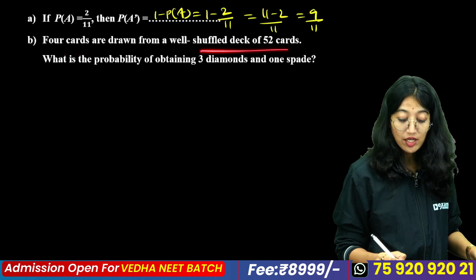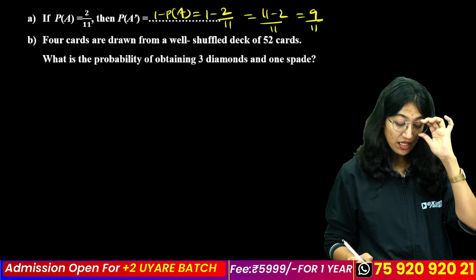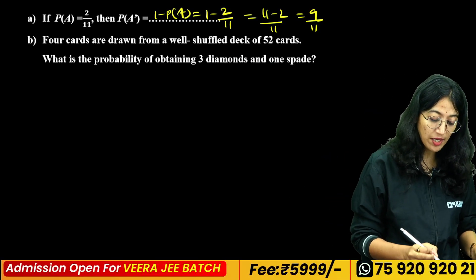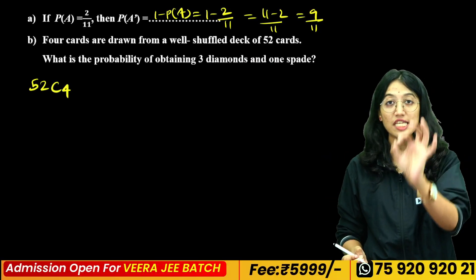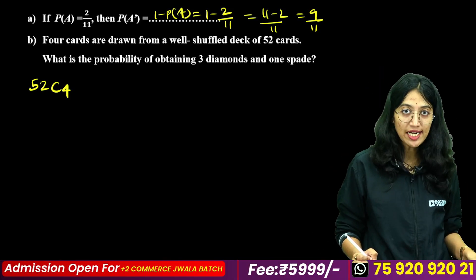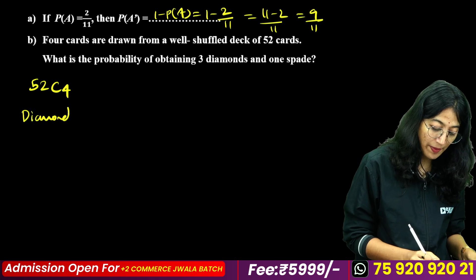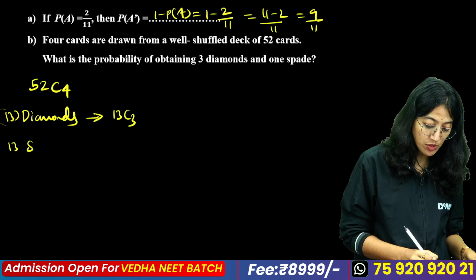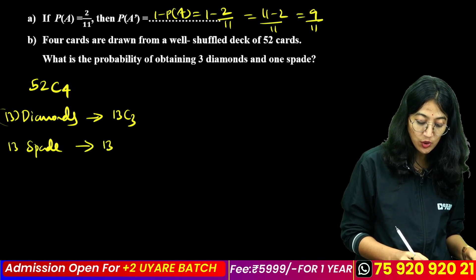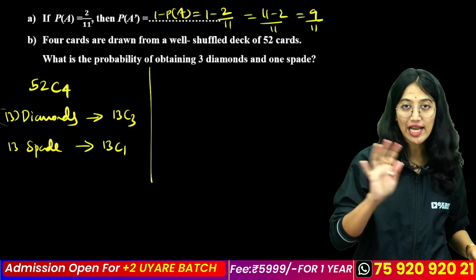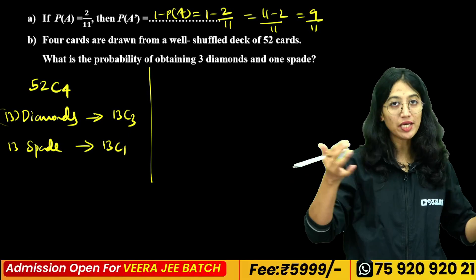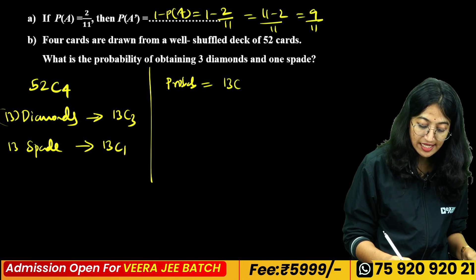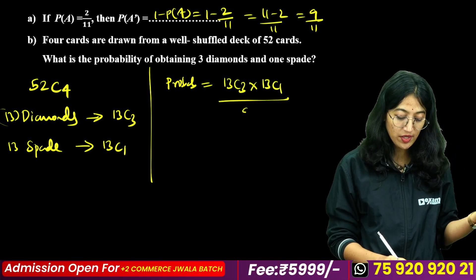Four cards are drawn from a well-shuffled deck of 52 cards. Find the probability that 3 are diamonds and 1 is not. The total sample space is 52C4. There are 13 diamonds, so we choose 3 diamonds: 13C3. For the remaining 1 card from the other 39 cards: 39C1, but here taken as 13C1. Therefore probability = 13C3 × 13C1 divided by 52C4.